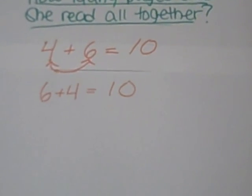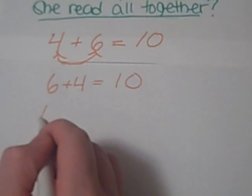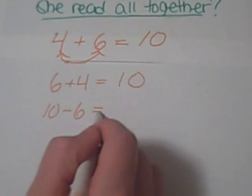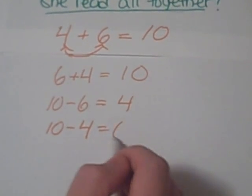And we can also do a subtraction, because subtraction is the whole minus a part gives you a part. So we can do 10 minus 6 equals 4, or 10 minus 4 equals 6.